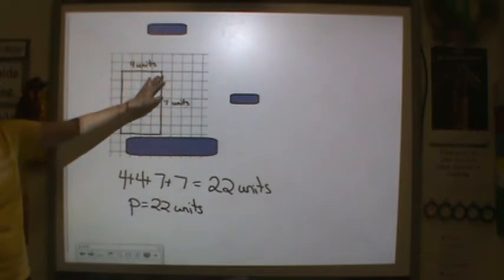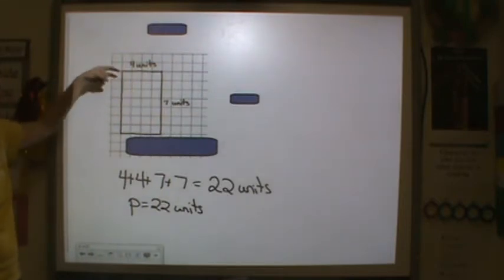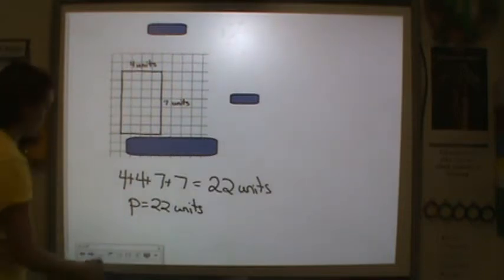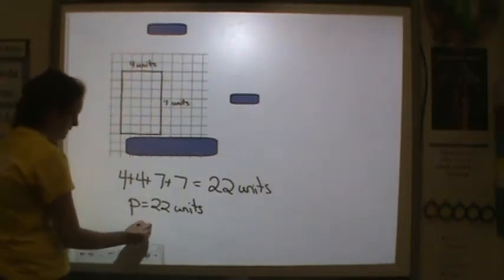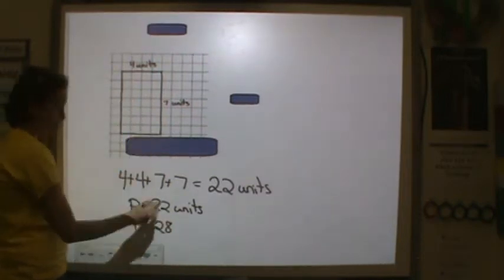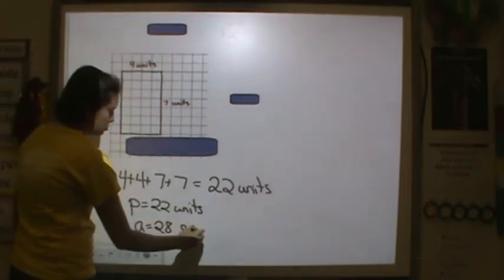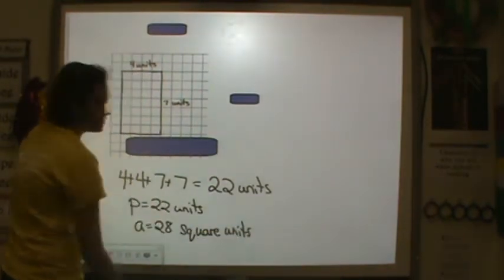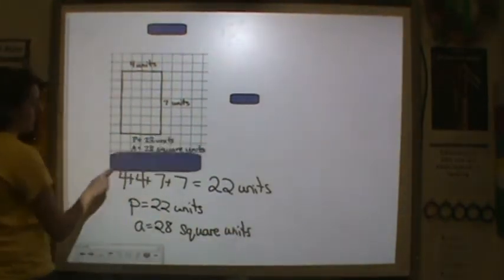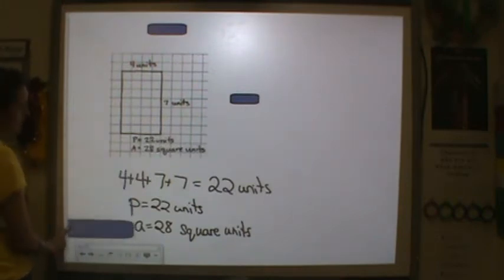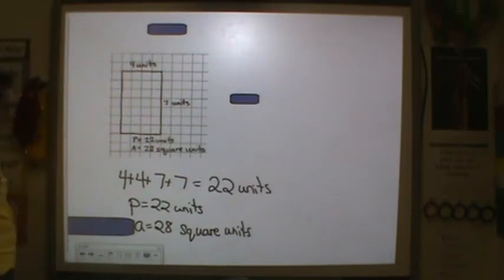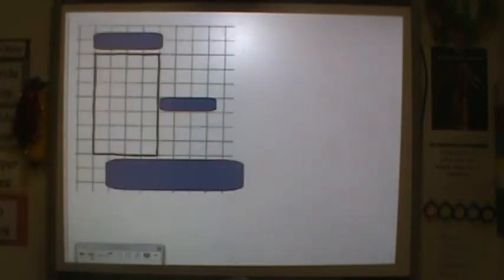And then if you counted the inside, counting by fours: 4, 8, 12, 16, 20, 24, 28. So the area is equal to 28, and remember, I'm counting squares, so area is in square units because it's the number of squares that cover the surface. The perimeter is 22 units and the area is 28 square units.